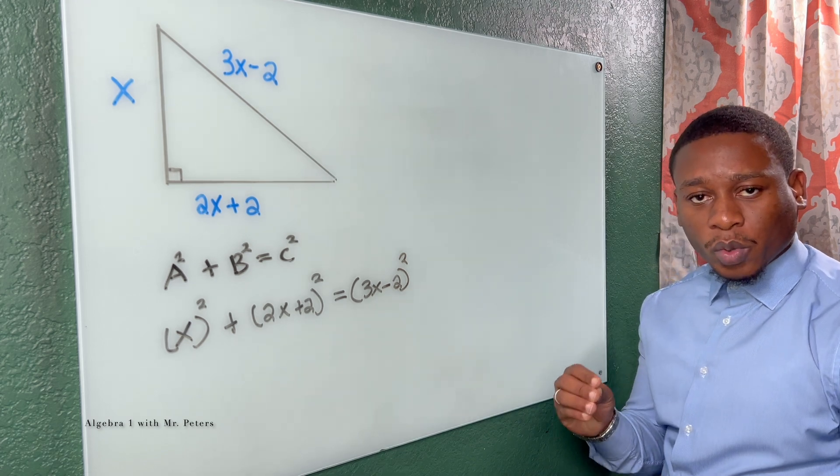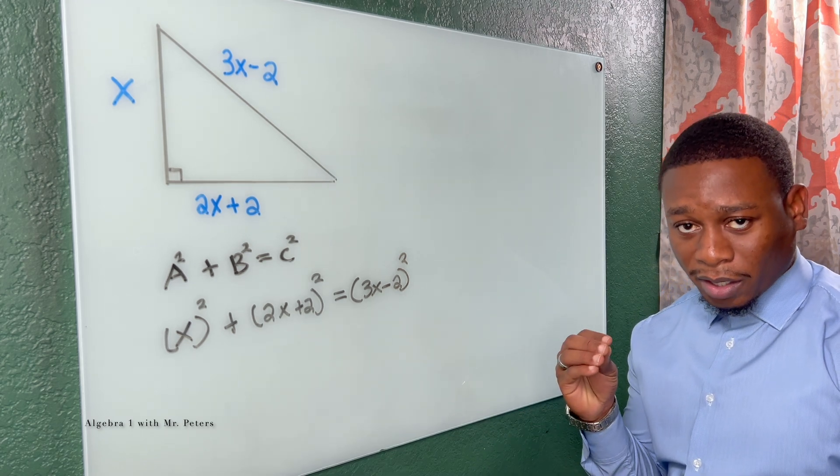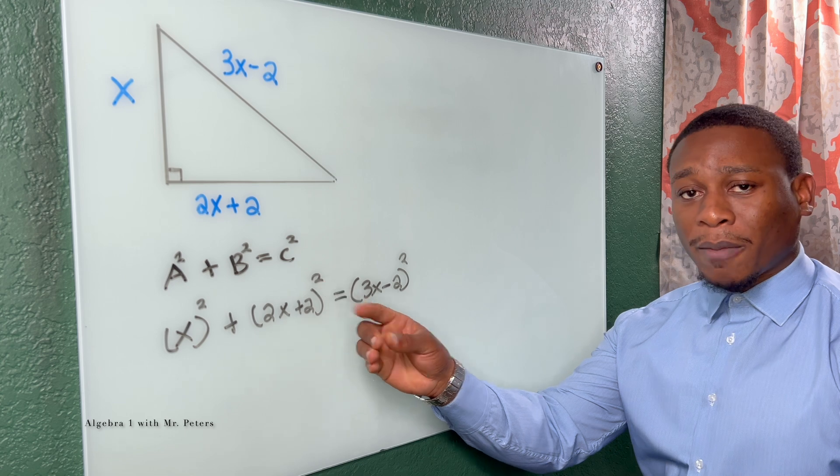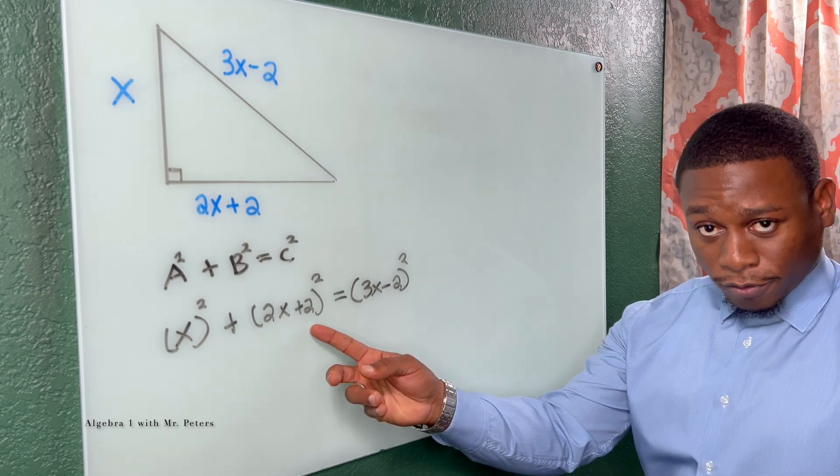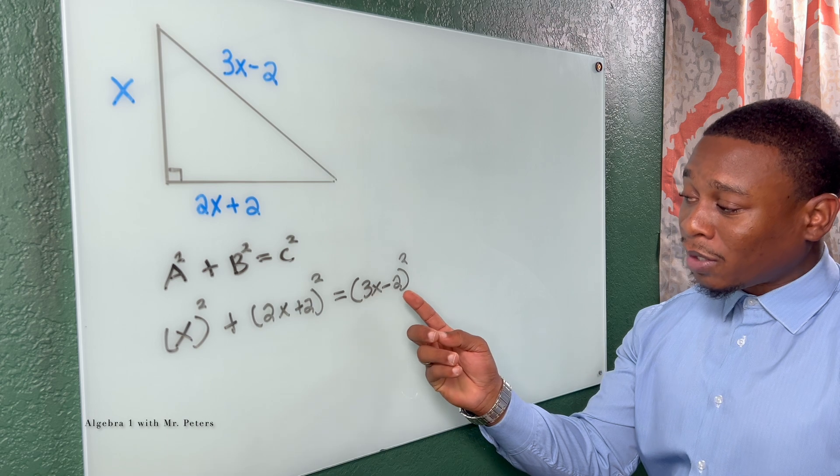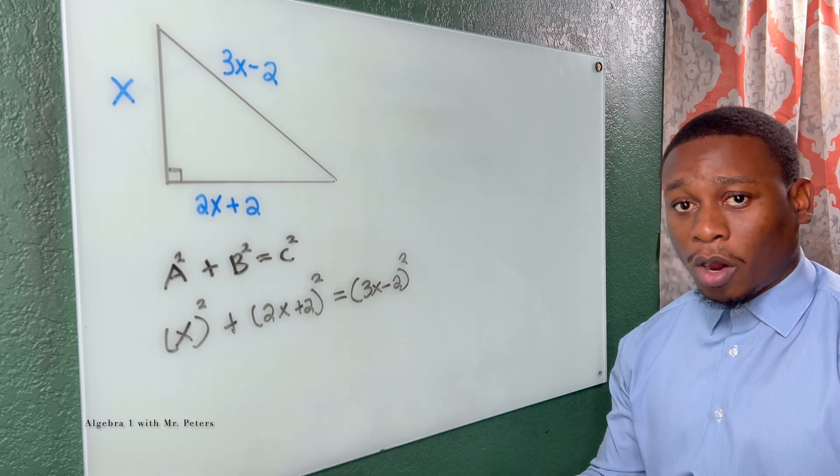So sometimes students will get these type of problems wrong because they take everything to the second power incorrectly. If you get 4X plus 4 or 9X plus 4, we did the wrong thing.